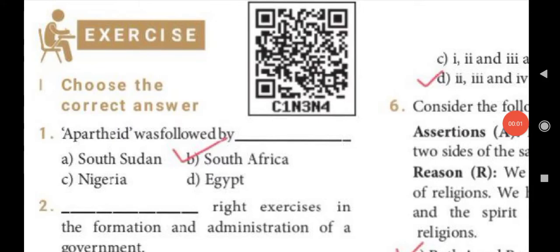Hello students. Now we are going to see 9th standard Social Science, Civic Spot, Unit 3: Human Rights. In this lesson, we will go to book-back one mark questions.